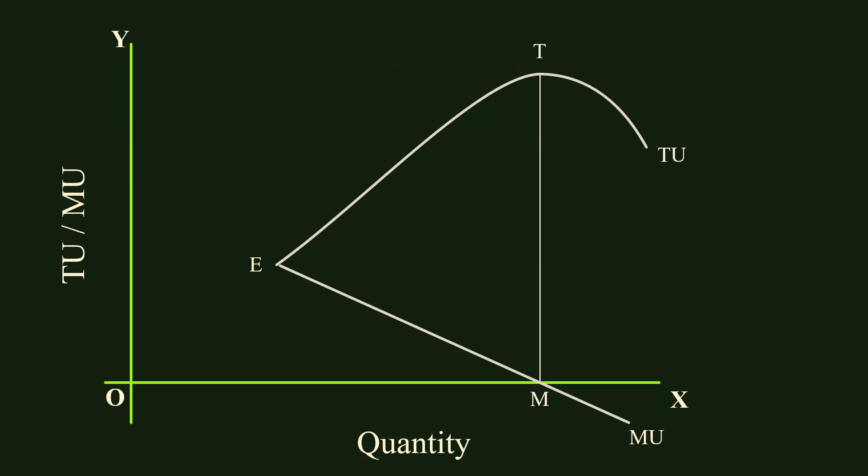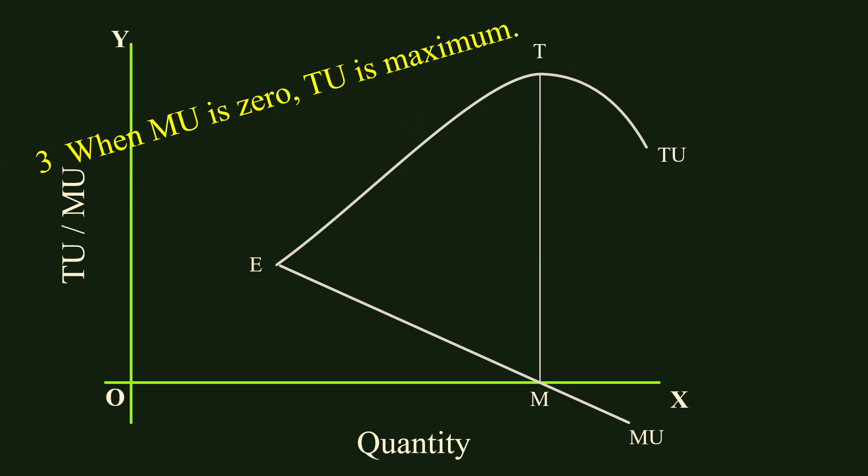Third relation: when Marginal Utility is zero, Total Utility is maximum. At point M, Marginal Utility becomes zero. Corresponding to this, at point T on the Total Utility curve, Total Utility reaches the maximum.